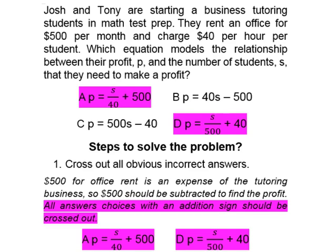So for number one, crossing out all obvious incorrect answers, we know that we can cross out A and also we can cross out D.